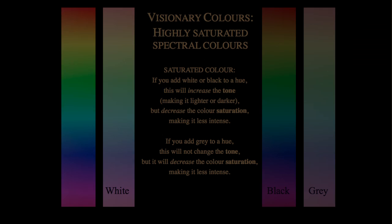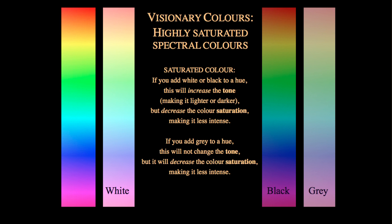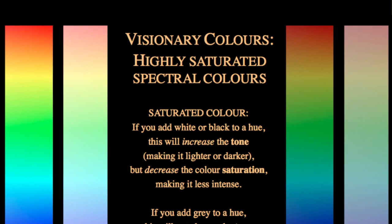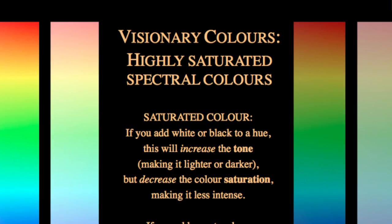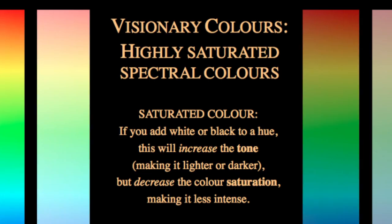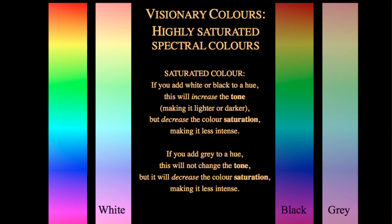As painters we have to use pigments, and something happens when we add white, black, or gray to a pure color. If you add white or black to a hue, this will increase the tone — making it lighter or darker — but decrease the color saturation, making it less intense. Every time I put white or black into my color, it's not as saturated anymore. If I manage to find the same gray tone as that green or red and put the gray in, it will also kill the saturation. So every time we try to darken or lighten colors by adding white or black, we're killing the saturation.